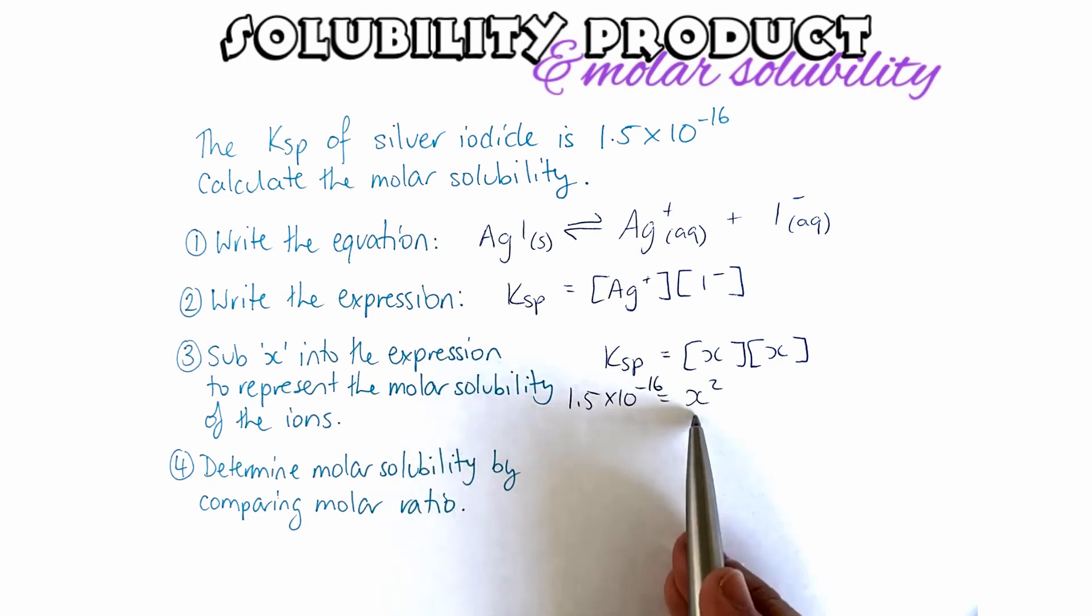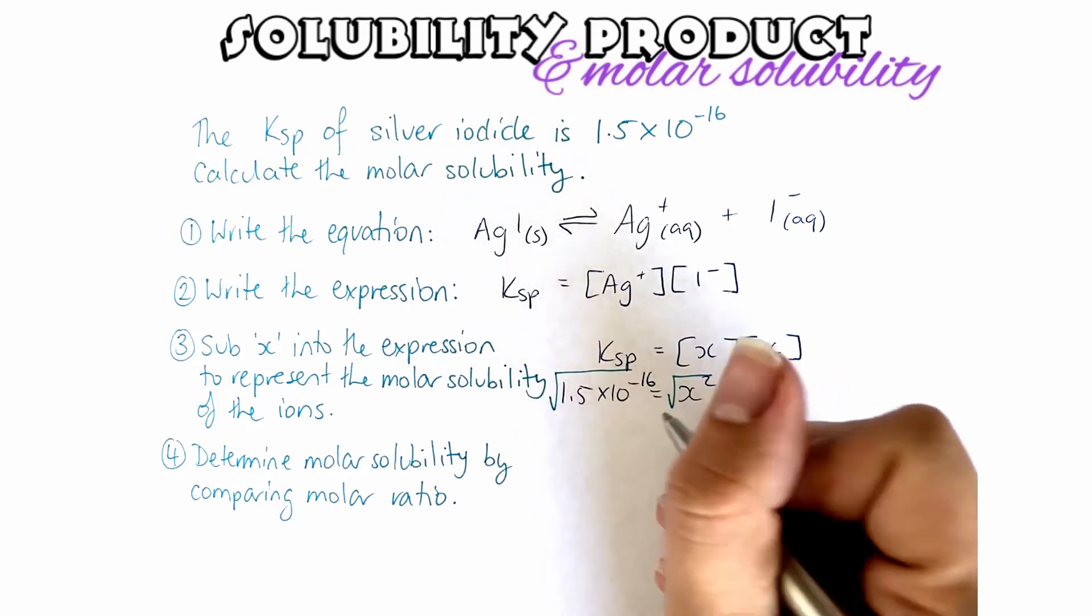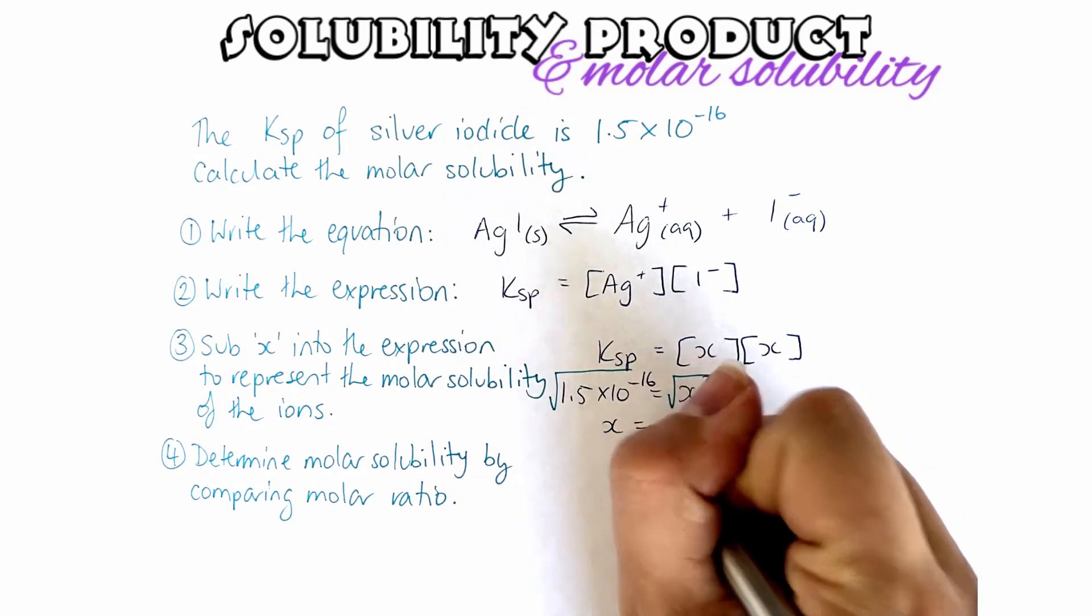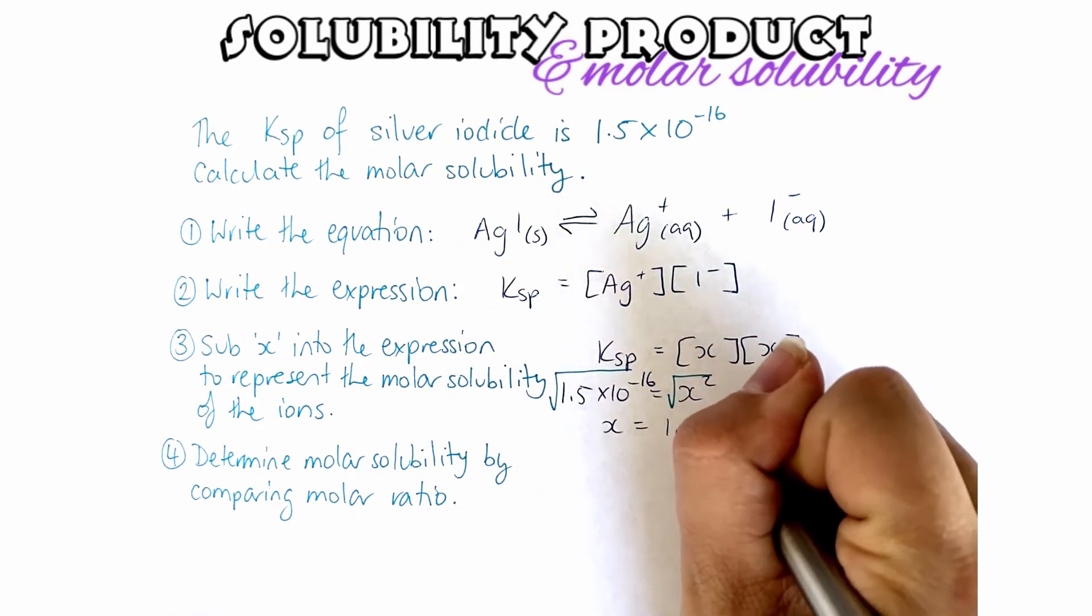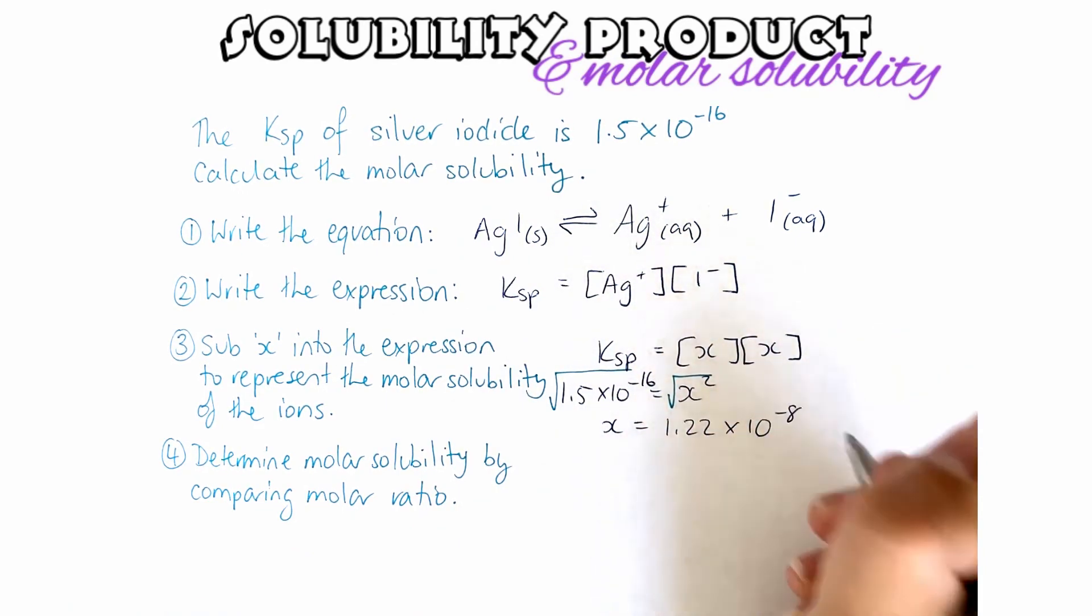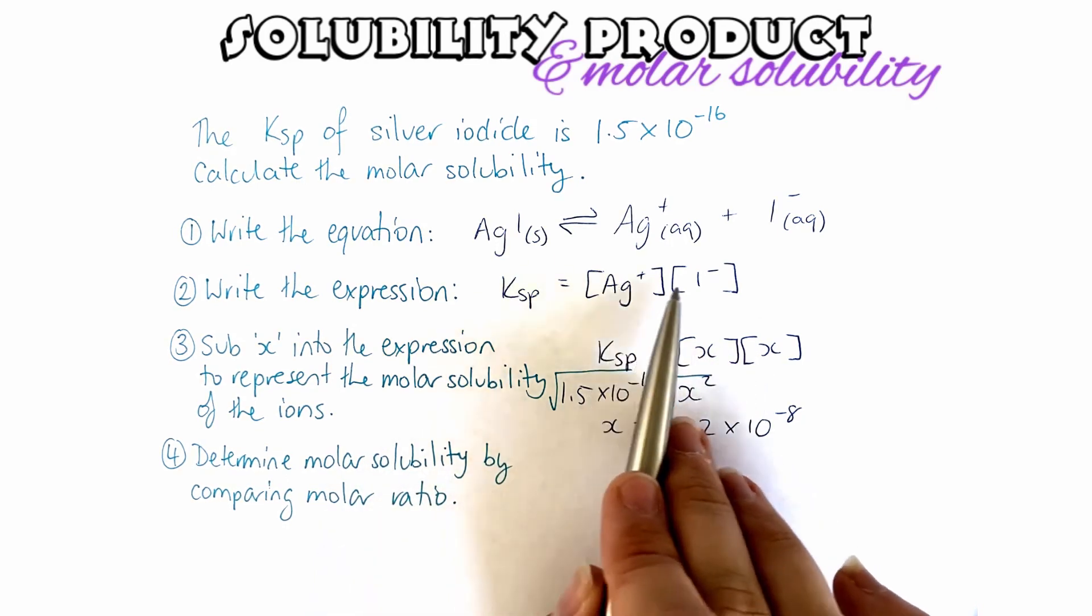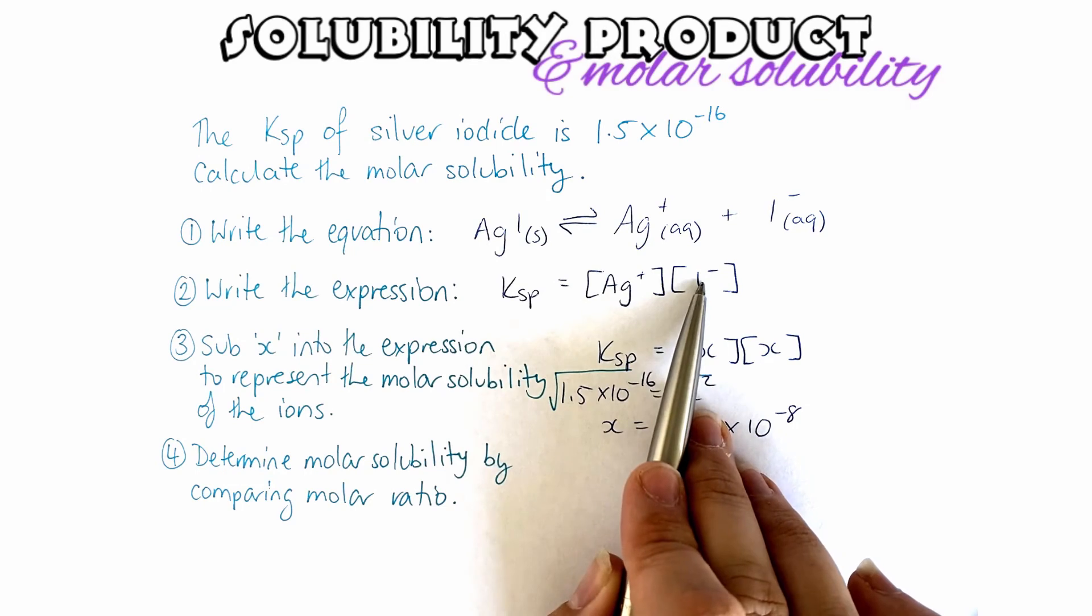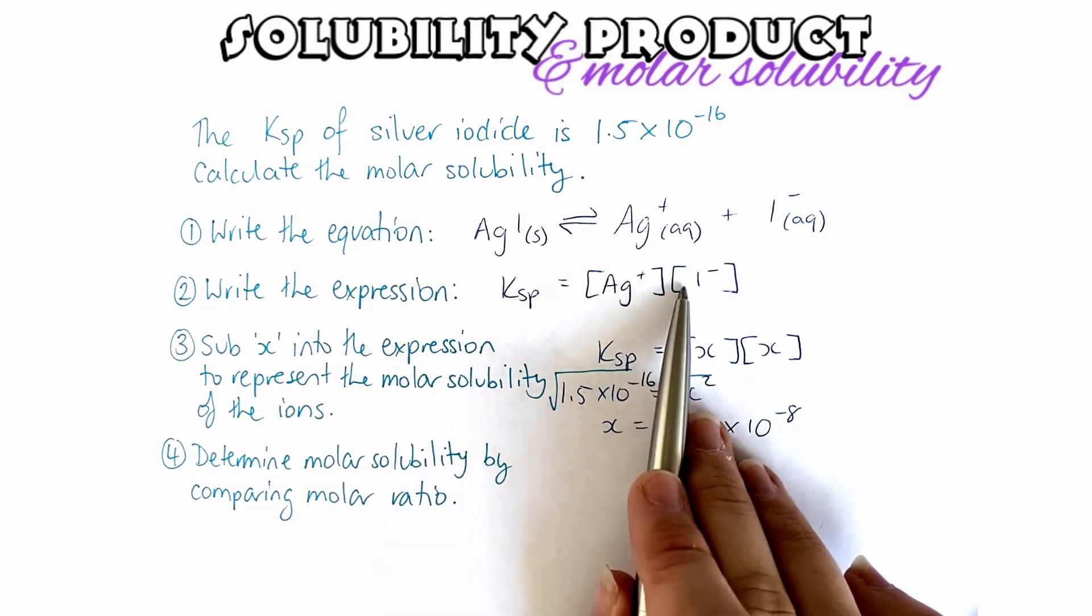So if I take the square root of each side, that means that I can find the value for x. So x equals 1.22 times 10 to the minus 8. That's telling me that the concentration of each of these species here, silver and iodide, are both 1.22 times 10 to the minus 8 because they're one-to-one ratio.